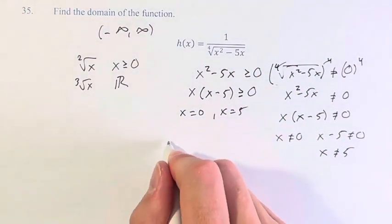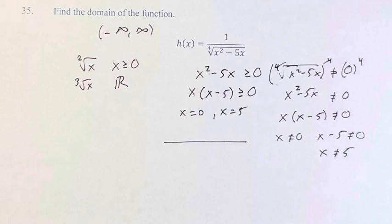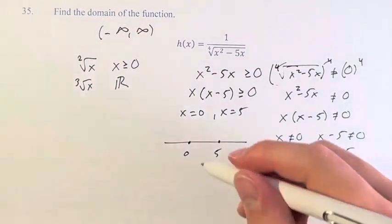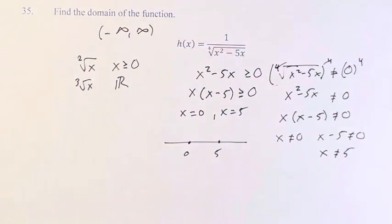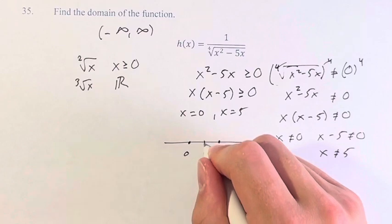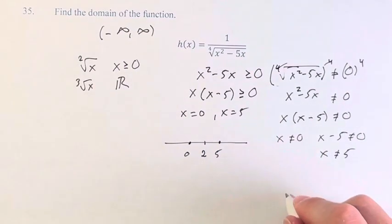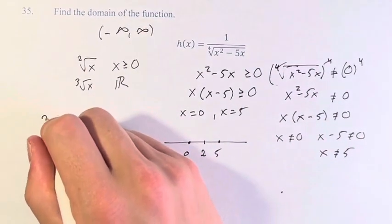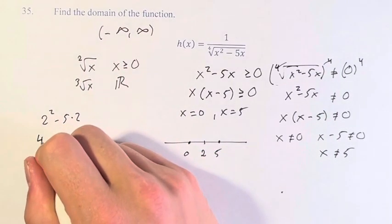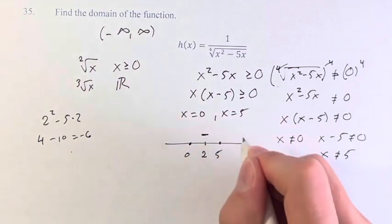And say, we have a number line. On the intervals in between these points, which of them are going to be greater than or equal to 0. So in between, we can just pick any point. Let's say 2. And we could do 2 squared minus 5 times 2. This is equal to 4 minus 10, which is negative 6. Therefore, this is negative.